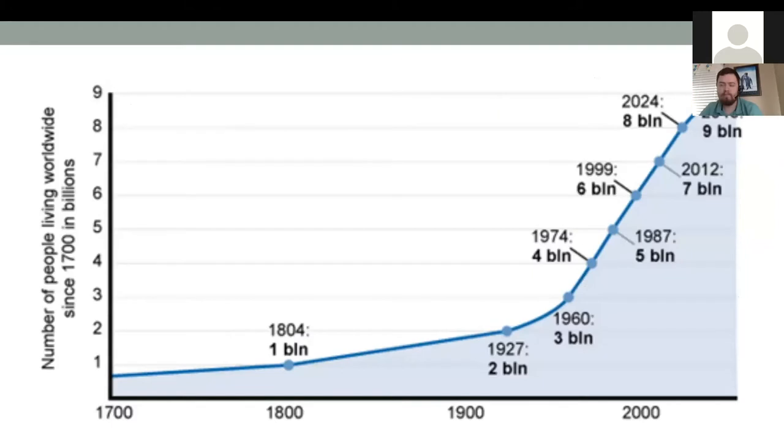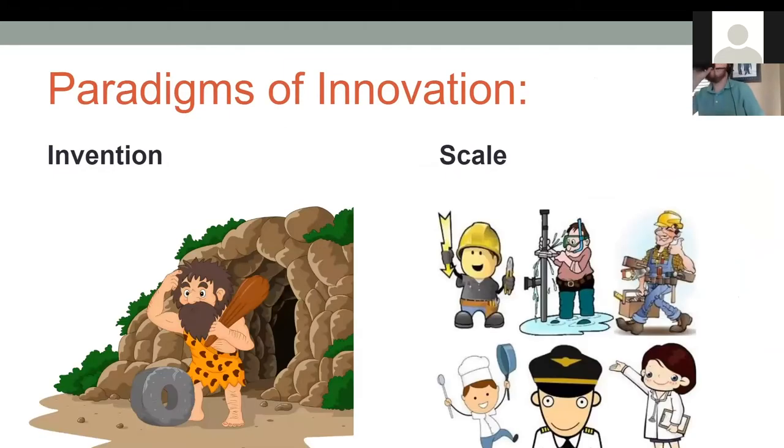Today, I want to extend that discussion to two additional paradigms for innovation, and to discuss their relationships with the environmentally relevant topic of population growth. So here's the two paradigms: invention and specialization, trade, and the economics of scale, or what I'm just going to call the scale paradigm for short.